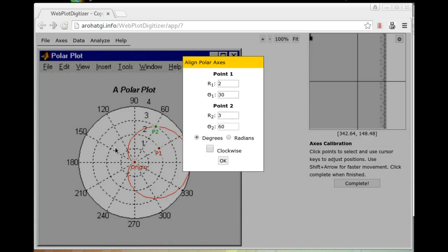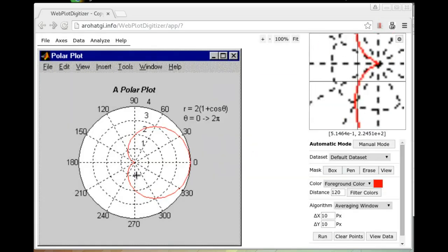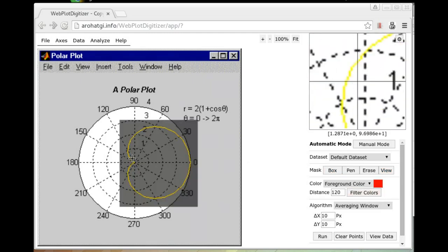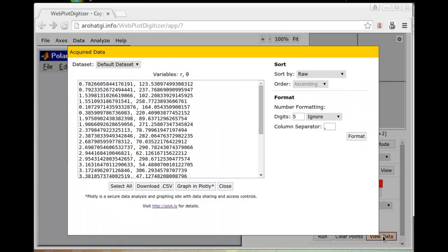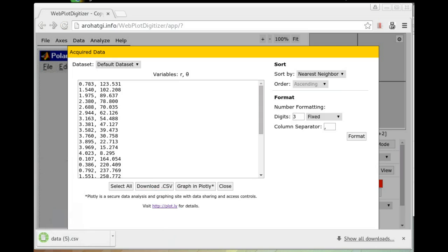Make sure to choose degrees. And if the diagram was oriented clockwise, click clockwise. In this case, this is an anti-clockwise standard polar diagram. Click OK. Now we can switch over to the automatic mode and pick the red color. Draw a box. That looks pretty decent. And click run. We can view the data right away. Sort. And sort the data by either R, theta, or just connectivity. And we can just click download CSV to download the file.